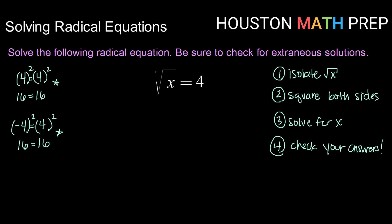That's already done for us so we'll move to the next step which is square both sides. So squaring both sides the square and the square root cancel out to leave me with just x equals 4 squared is 16. So our potential solution here is x equals 16.